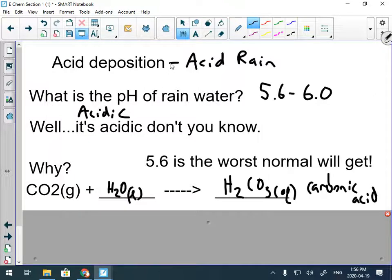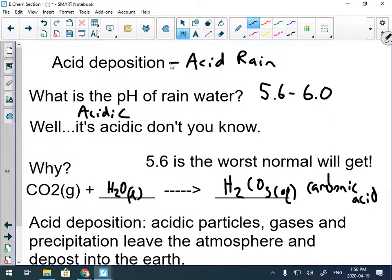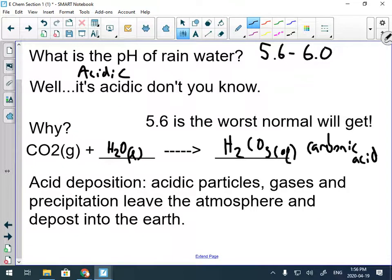If you have pH paper, there's like a big kerfuffle when normal people get pH paper and they test rain and they're like, oh my God, the rain is acidic. However, if you get below 5.6, that is unnatural acid rain.